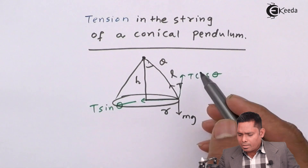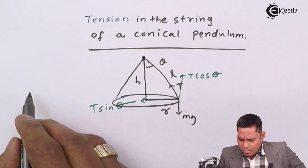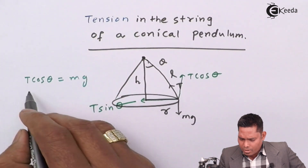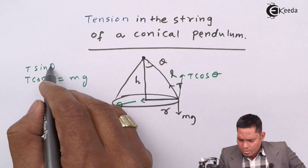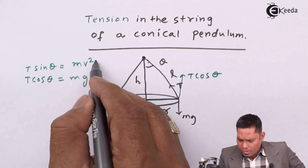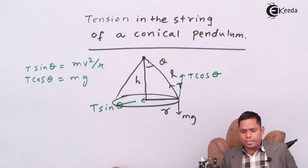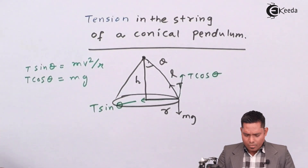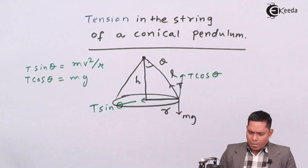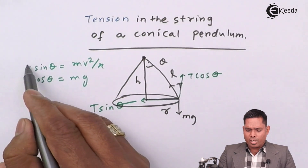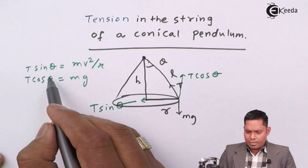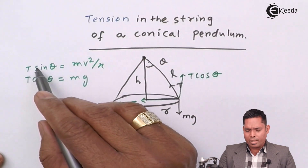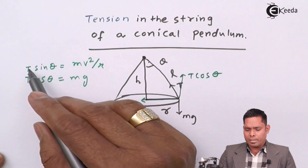Now we will write the expression: T cos theta components balance each other out, and T sin theta provides the centripetal force. This is what we have done, and then we went on to find the time period of a conical pendulum. Now, here I want to find T — T stands for the tension. To find that, I will square both equations and add them up, because by doing so I will have sin²θ + cos²θ = 1, and T can be found.